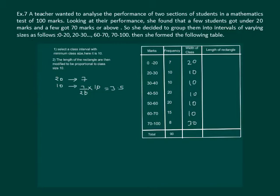Similarly we will calculate for all the class intervals and fill up the length of the rectangle column. First one we have calculated to be 3.5. Similarly the next one will be 10 by 10 into 10 equal to 10. Similarly next one will be 10. Next one will be 20 by 10 into 10, that's 20. Again 20 by 10 into 10 is 20. 15 by 10 into 10 is 15. How about the last one? It will be 8 by 30 into 10, which is 2.67.